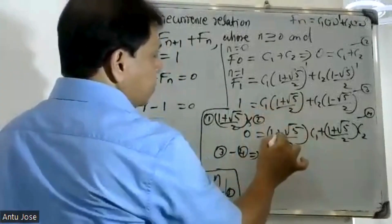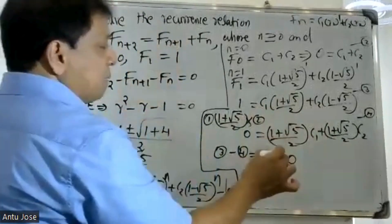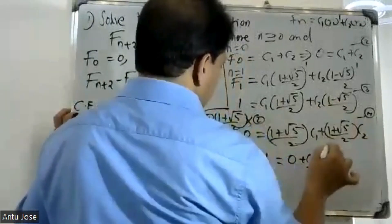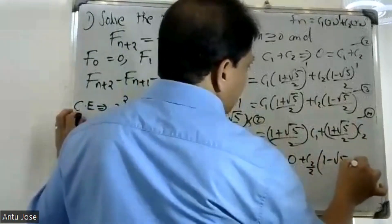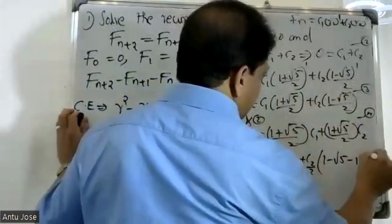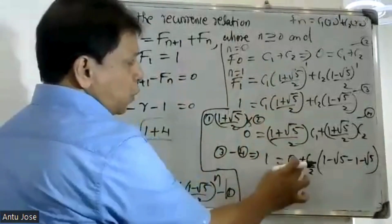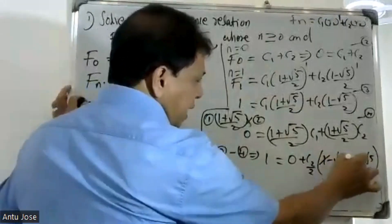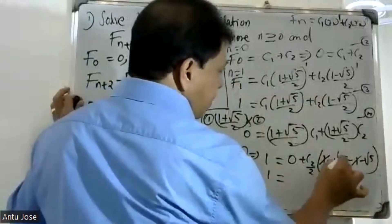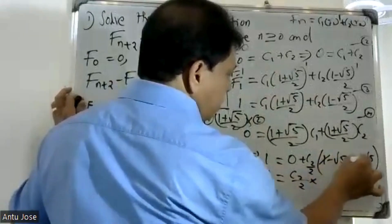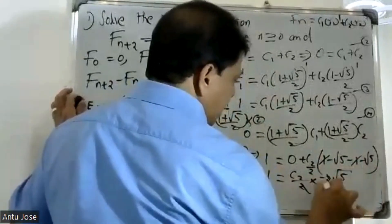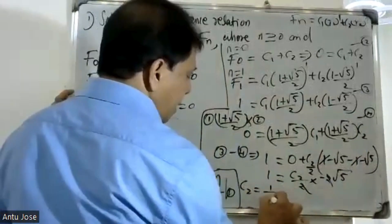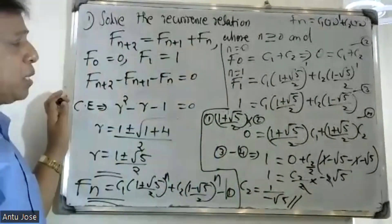From C1 into one plus root five by two and C2 into one minus root five by two, subtracting equation 3 from equation 4: one minus root five minus minus one minus root five gives zero equals minus root five times C2 by two. Therefore C2 equals minus one by root five, and substituting back, C1 equals one by root five.